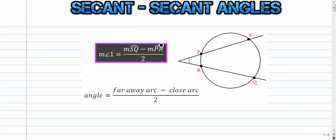Alright, our next video in the circle unit is secant-secant angles. So here we have two secants, secant SP and QR, and they are intersecting outside of the circle. And when that happens, we have some very interesting stuff that's going on.